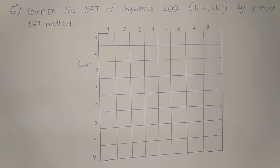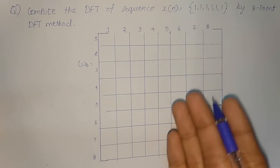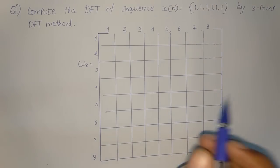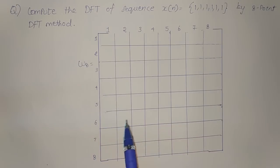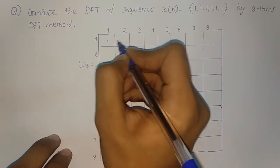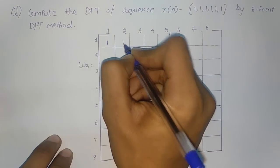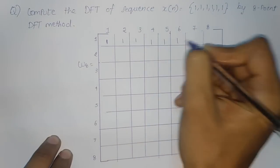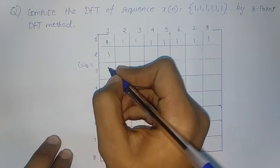I will tell you all the tricks to construct the matrix first, and then we will go on to find the DFT. So first, in this 8 by 8 matrix, the first row and the first column must be marked as ones.